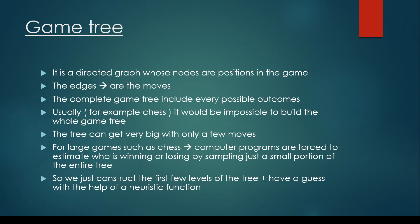The complete game tree includes every possible outcome, but usually for games like chess it would be impossible to build the whole game tree, because the tree-like structure can get very big with only a few moves. So for large games such as chess, computer programs are forced to estimate who is winning or losing by sampling just a small portion of the entire game tree. We just construct the first few levels of the tree, plus we make a guess with the help of a heuristic function.